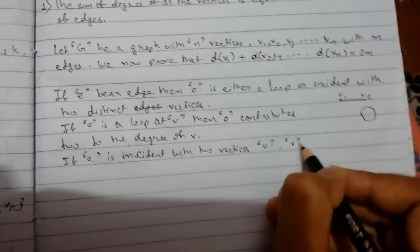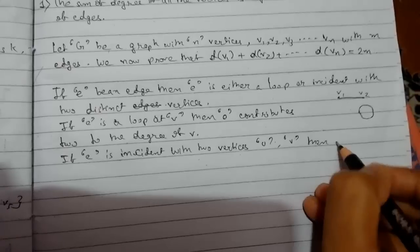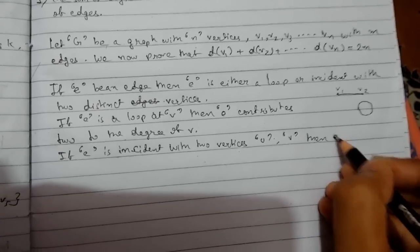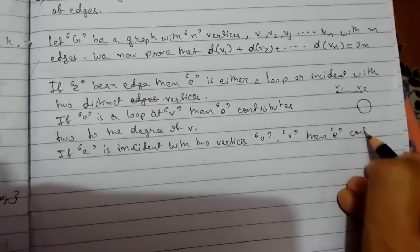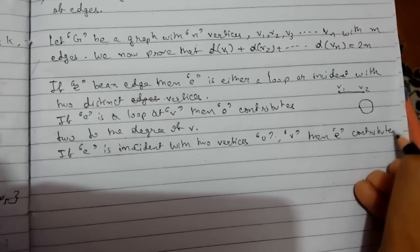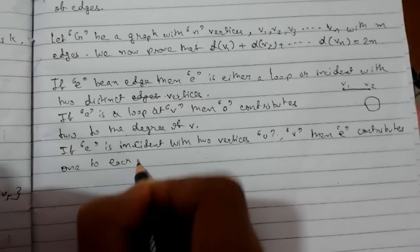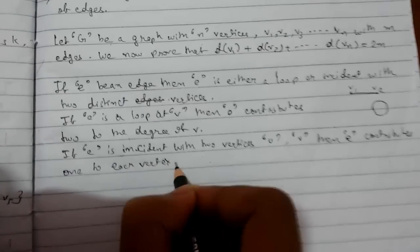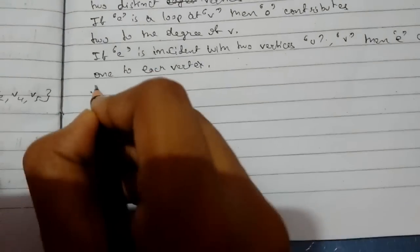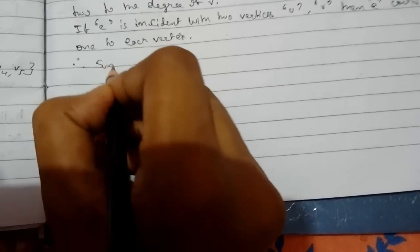Then e contributes to the degree of each vertex. So we can say that therefore the sum of each edge...